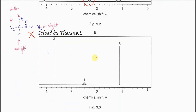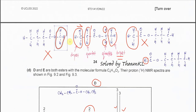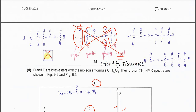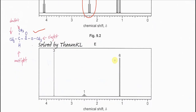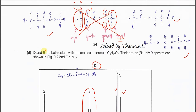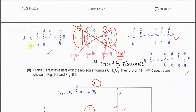For compound E from figure 9.3, the spectrum shows a very intense doublet, a multiplet, and a singlet. Checking each isomer: isomers with only triplets and no doublets are eliminated one by one — those featuring CH2 groups adjacent to CH2 or CH3 produce triplets, not doublets. Isomers 1, 2, and 3 cannot form a doublet and are therefore eliminated.